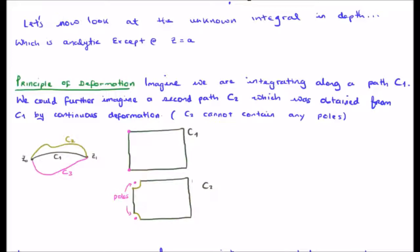So let's say we have a point here on the left side, z0 and z1, and we're trying to get from z0 to z1 by using the path c1.